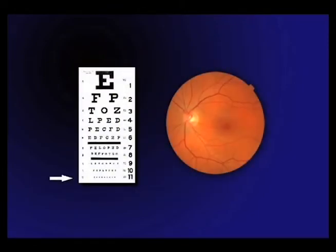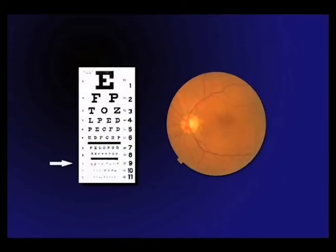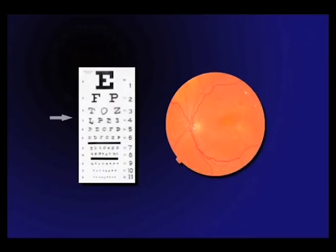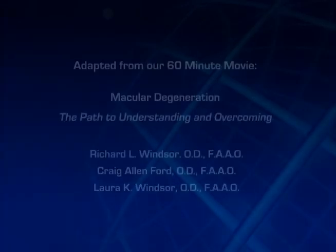In early macular degeneration, vision may only be minimally affected. Many dry macular degeneration patients may experience only a mild loss of visual acuity that may not progress, or progresses only mildly. In some dry macular degeneration patients, and in many wet cases, the degeneration may progress to a significant loss of visual acuity.